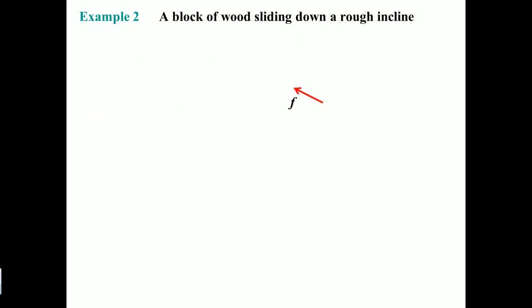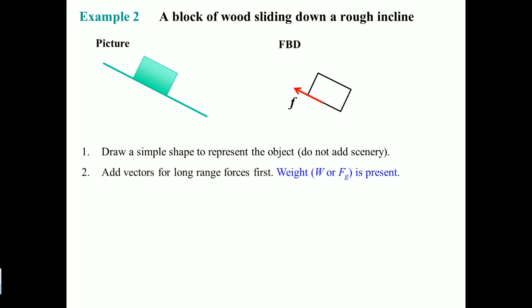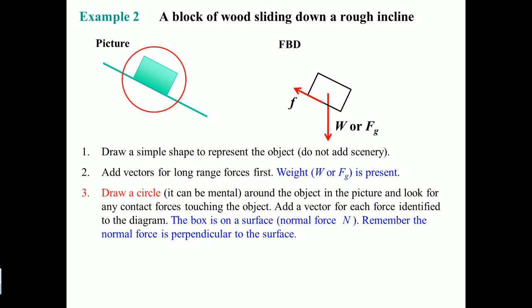This is a block of wood sliding down a rough incline. Please understand the rough incline means there's a force of friction. Here's the picture—that's the block being slid down a rough surface. Again, draw a simple shape to represent the object. I'm going to draw a box here. Next is the weight or force of gravity, going down on that block. Next, you want to draw a circle around the box to indicate you can now look for the contact forces, which is the normal force.